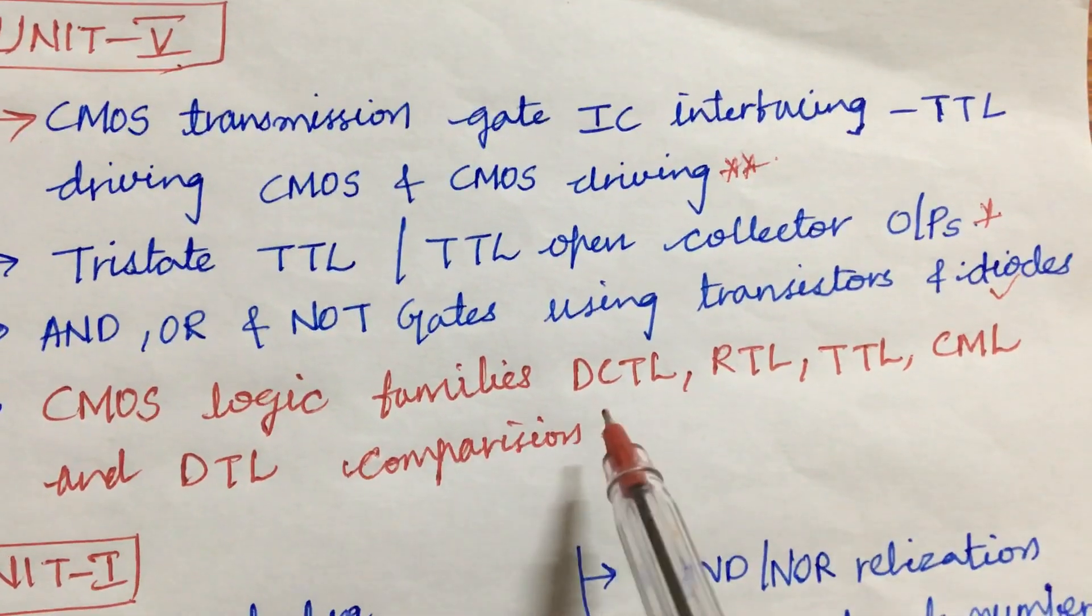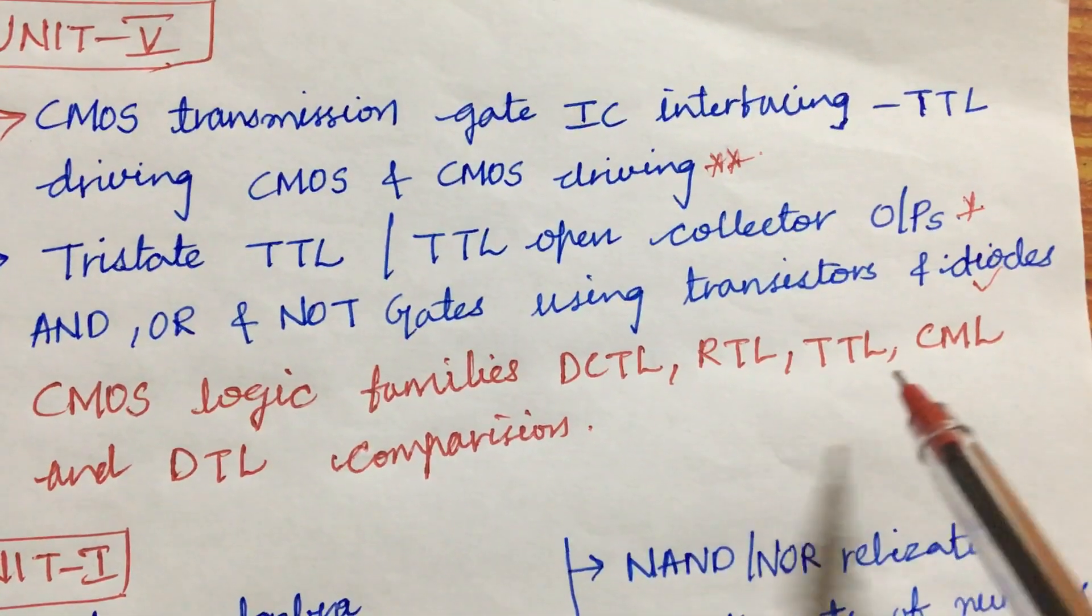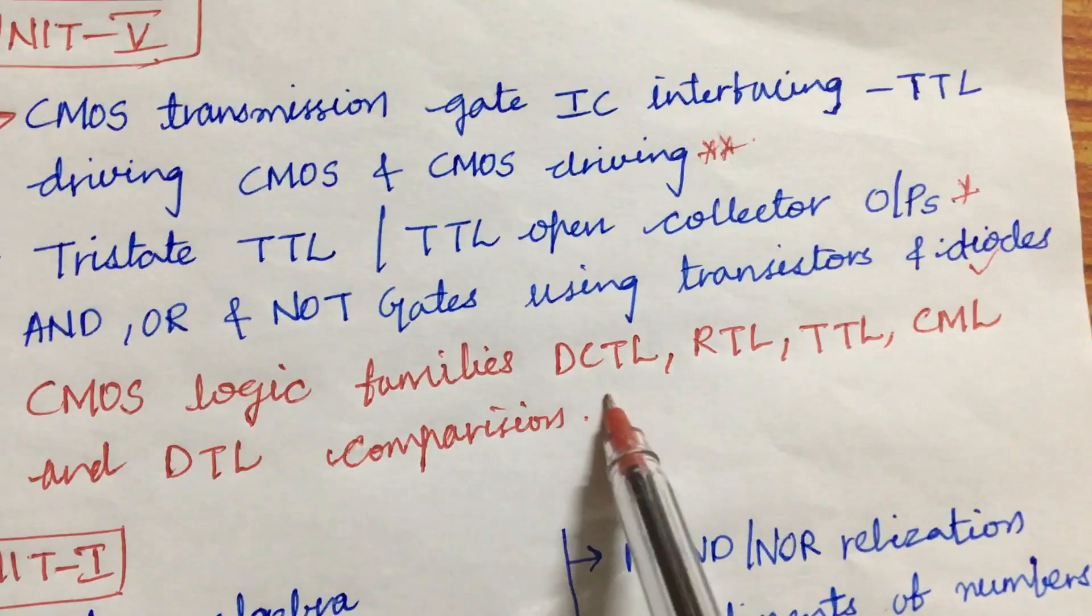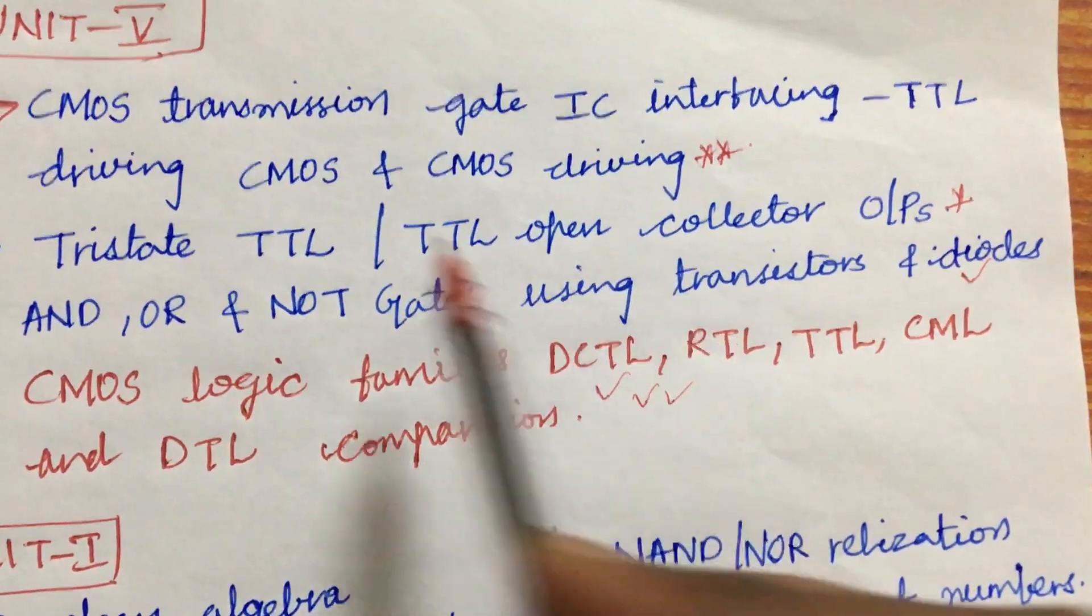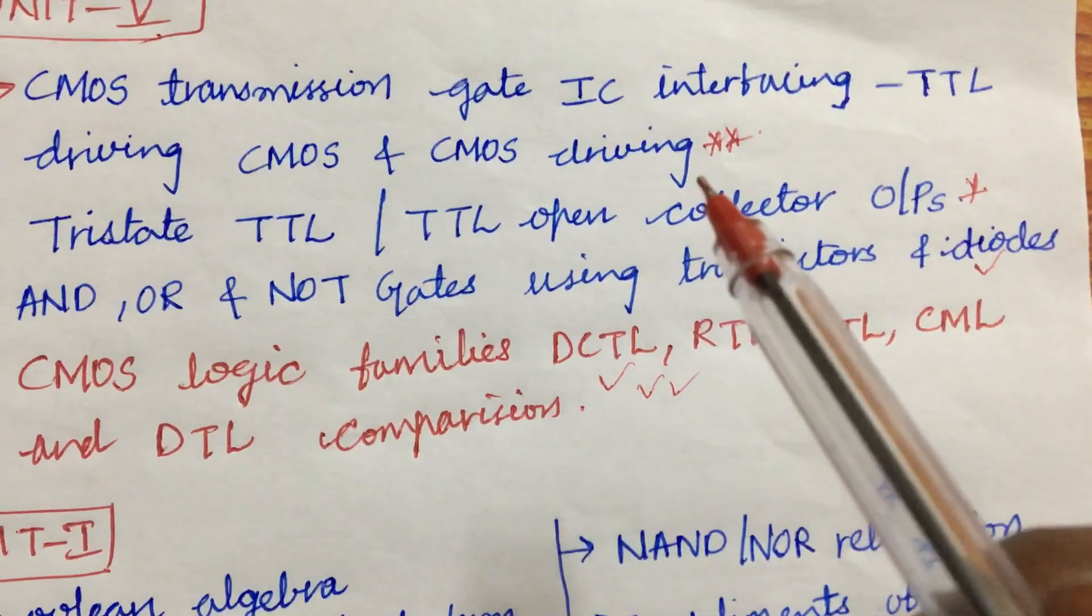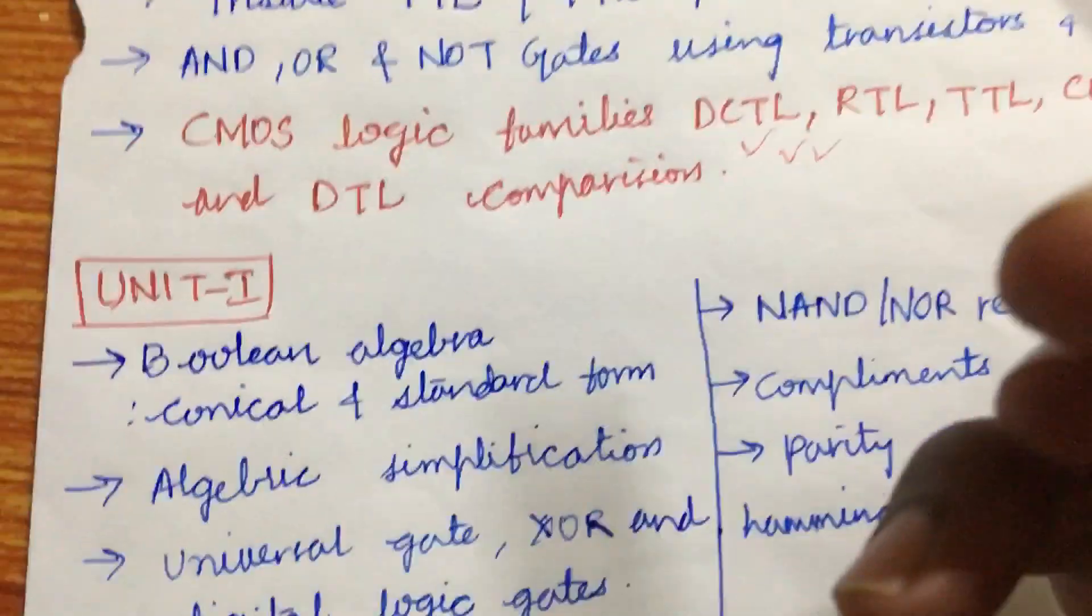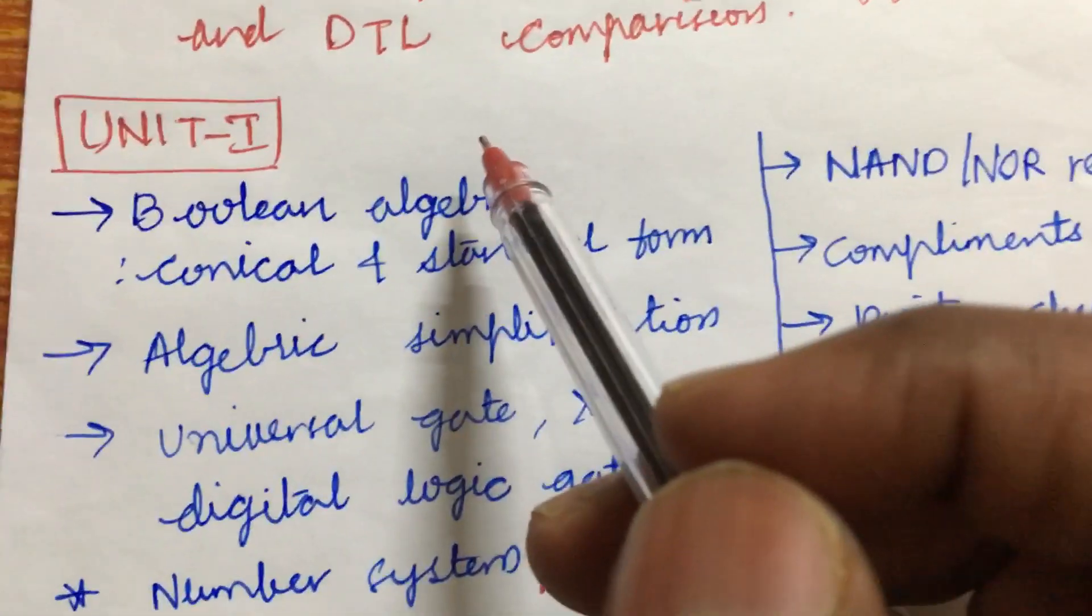Split on CMOS logic families: DCTL, RTL, TTL, CML, and DTL and their comparisons may also be asked. Please do concentrate on each and every part and work out all the diagrams only in pens.